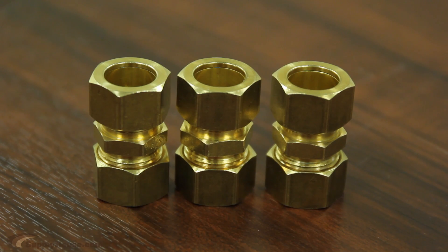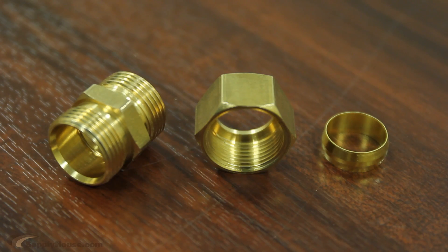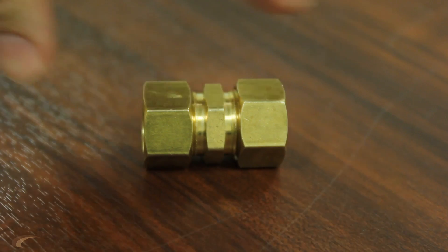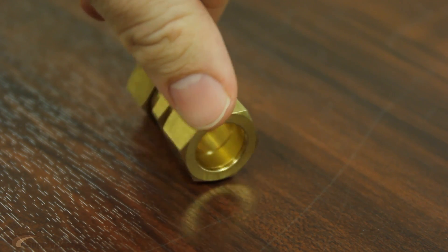Compression fittings are used to connect two pipes. They are comprised of three pieces: a body, a nut, and a gasket ring, or ferrule. They use pressure to tighten connections, which prevents leakage.